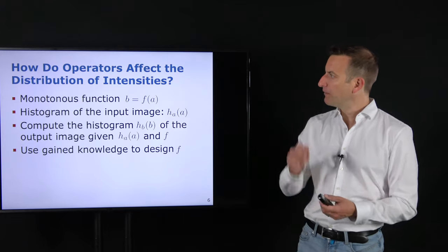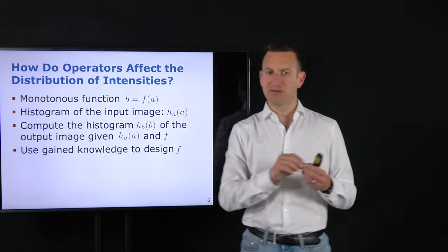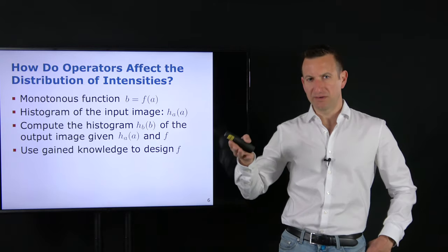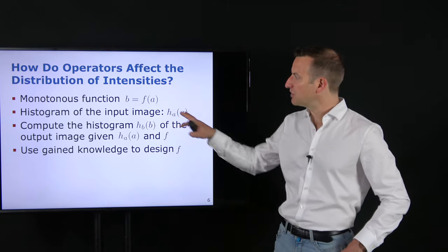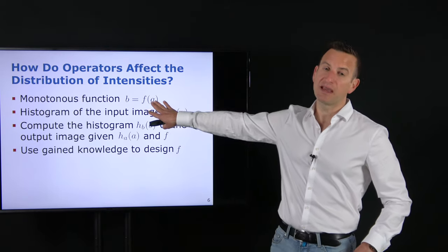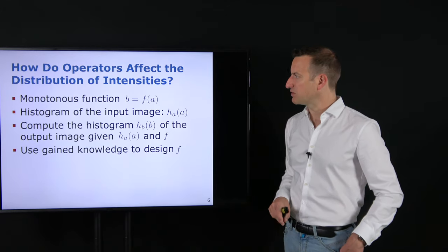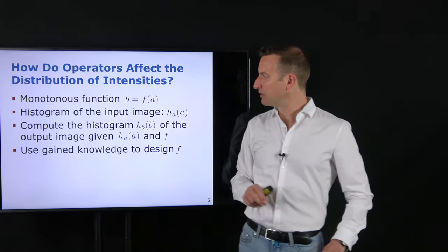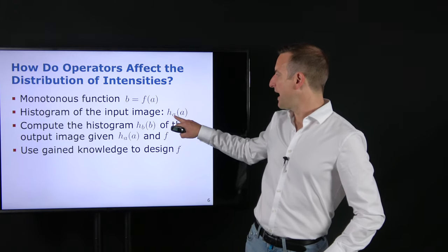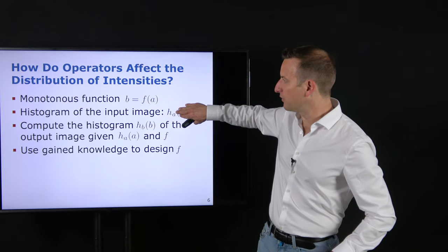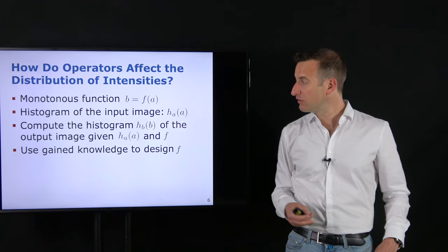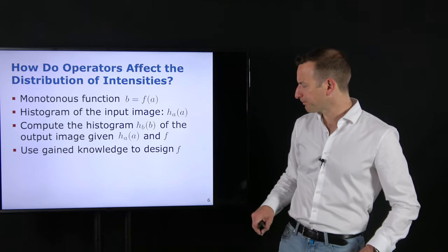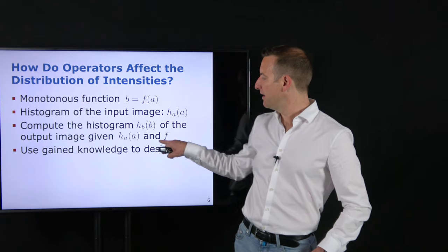Before we start designing F, we need to understand the process further. The first question is: can we compute the output histogram knowing only the transformation function and the input histogram, without knowing the input image itself? It will turn out, yes, this is possible. This will help us understand the relationship between the input image, output image, and F, so that later we can impose constraints on the output and design F to achieve desired properties.